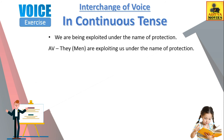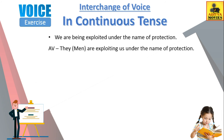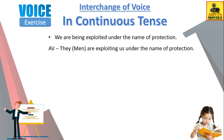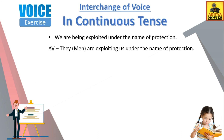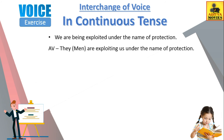The subject of the passive voice becomes the main object of the active voice, and it is always written after the verb form. So 'exploited' becomes 'exploiting'. The subject of passive voice 'we' becomes 'us' after the verb. Extra words follow. Active voice: 'They are exploiting us under the name of protection.'